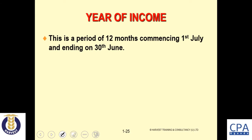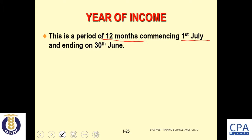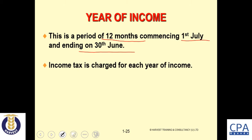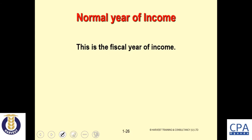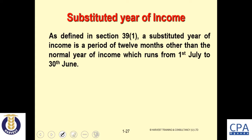The year of income is a period of 12 months, beginning 1st July and ending 30th June. Income tax is charged for each year of income. A taxpayer may apply to the Commissioner General to use any other period of 12 months — a substituted year of income. The normal fiscal year runs from 1st July to 30th June. Companies with financial years from 1st January to 31st December, for example, use a substituted year of income.